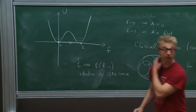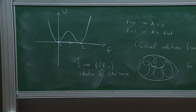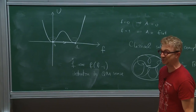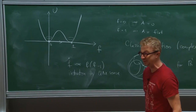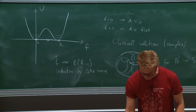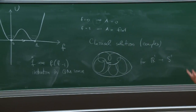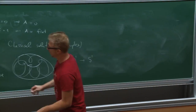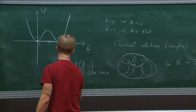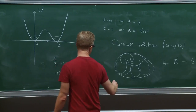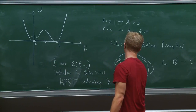That's actually going to be the instanton discovered by Belavin, Polyakov, Schwartz, and Tyupkin in 1975 — but in a slightly unusual form. This is the BPST instanton in radial coordinates.